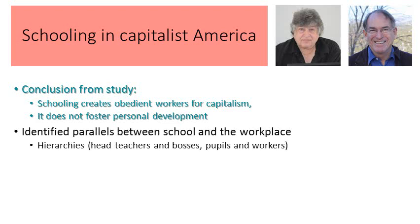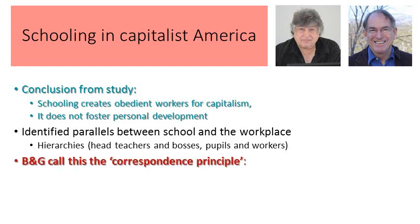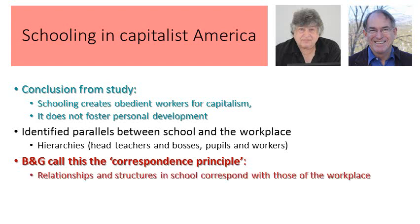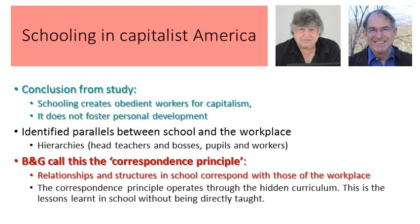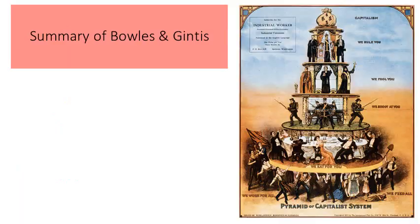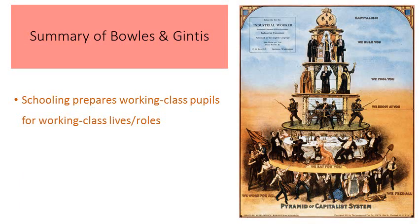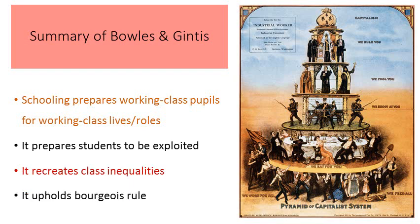The conclusion from the study was that schooling creates obedient workers for capitalism — it does not foster personal development. It's about creating a cheap, docile workforce for capitalism, not about individuals' desires or dreams. They also identified parallels between the school and the workplace, such as hierarchies: in school you have head teachers, in the workplace you have bosses; in school you have pupils, in the workplace you have workers. Bowles and Gintis refer to this as the correspondence principle — there is a correspondence between the school and the workplace — and this operates through the hidden curriculum, taught implicitly rather than being directly taught.